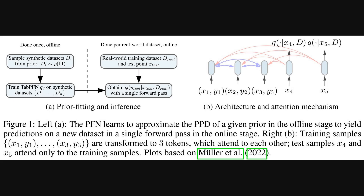The paper includes figure one, which kind of lays out the whole process. On the left side, it shows the two main phases. First, there's an offline part, done just once, where they train Tab PFN on a whole bunch of synthetic datasets generated from what they call a prior.